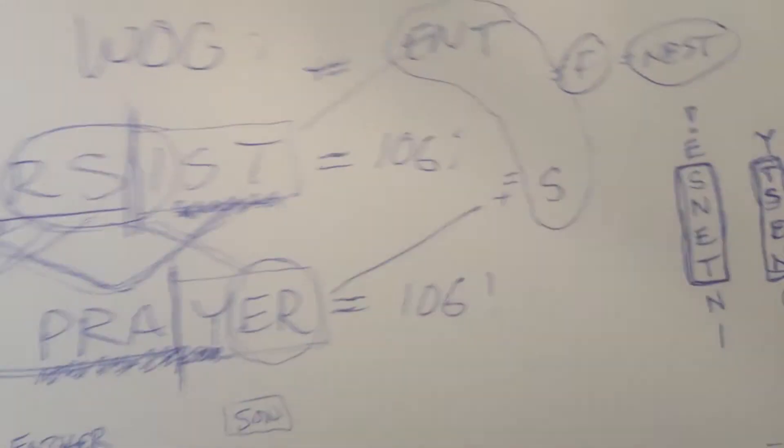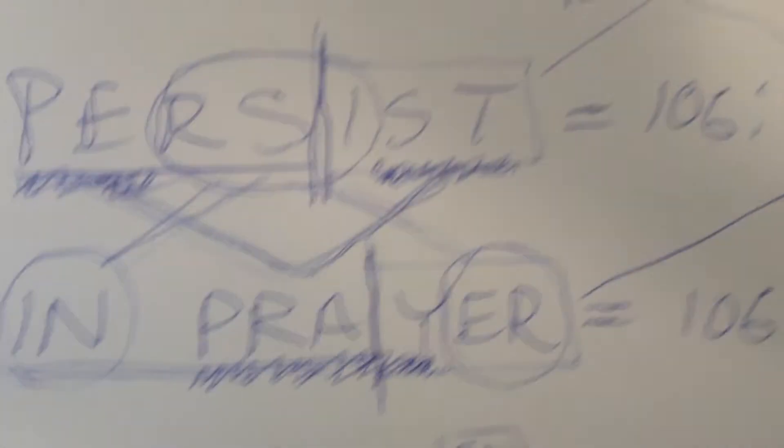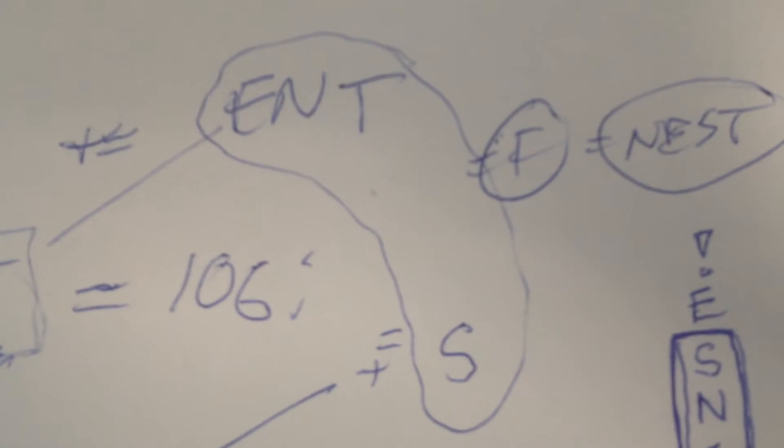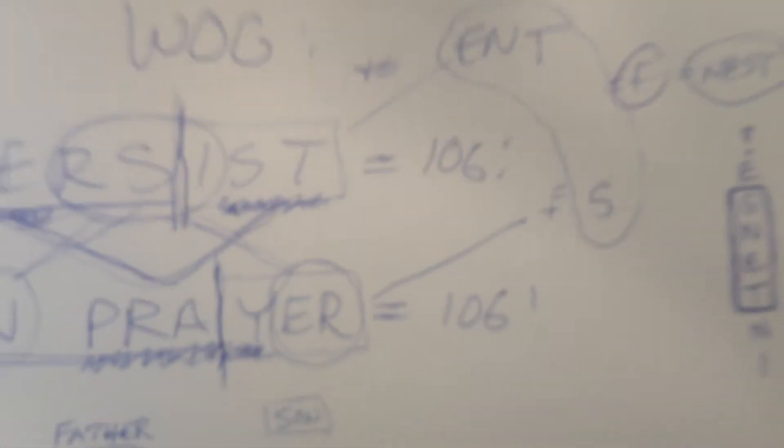And then a follow-up bonus point: if you say people are now persistent in prayers, you add the famous word nest, which equals another father, and you are through the roof. Bonus points on the test. Persistent in prayers.